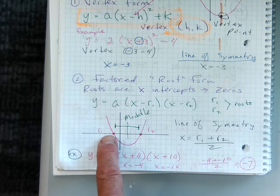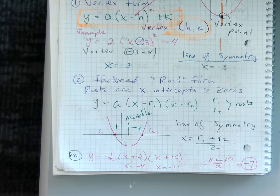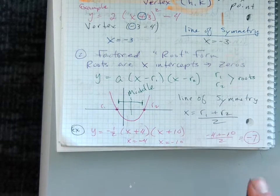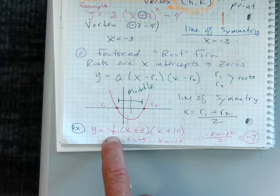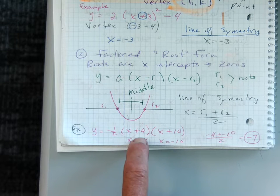Easy way to get the line of symmetry is just take the average of the roots. So r1 plus r2 divided by two. So I showed an example. Here's just an example.